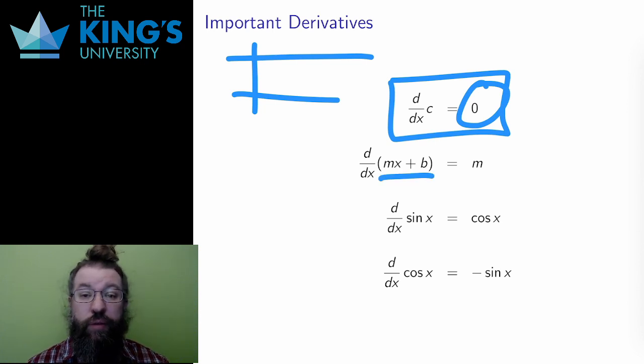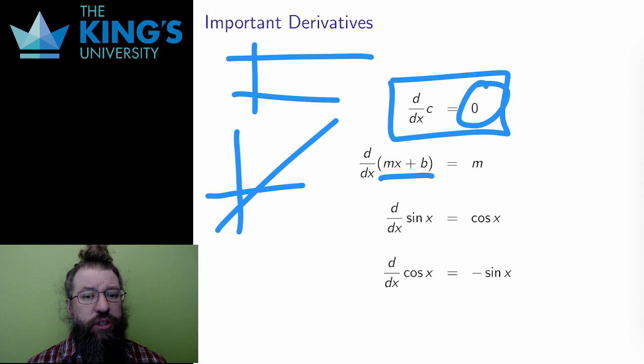What is the derivative of a linear function? A linear function is a straight line with a slope. And the derivative is the slope, so in the function mx plus b, the constant m is the slope, so the derivative must be this number m, which is constant over the whole line.